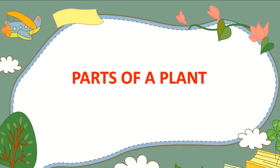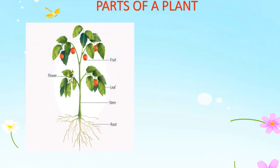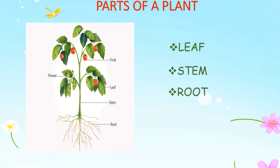This is the picture of a plant. The basic parts of a plant are leaf, stem, root, flowers and fruit.